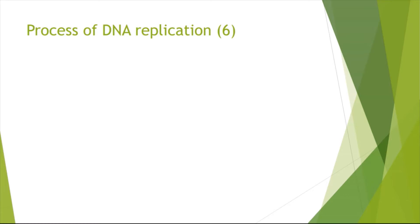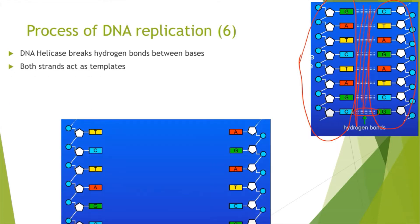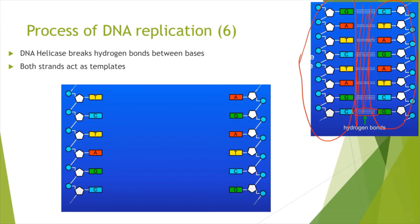The process of DNA replication has been a six-marker in previous exams and comes up a lot, so make sure you learn this. The first step is that DNA helicase breaks the hydrogen bonds between the bases. The DNA helicase breaks all of these hydrogen bonds between the two strands, meaning the strands are separated and both strands can act as templates.